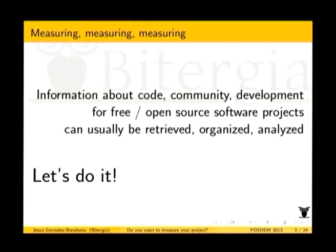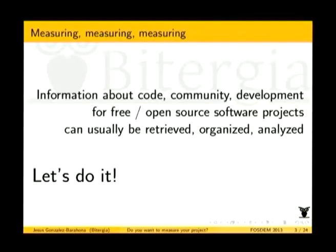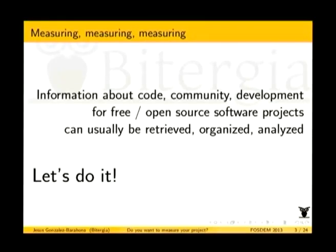Those of you that are developers know that there is a lot of information — not only about the code, which everybody knows is out there, but also a lot of information about the community: how the community interacts in mailing lists, in bug tracking systems, how the developing has been done in the commit records and code review tools. Free software projects are putting that information out there for transparency, and once that information is there, anyone can retrieve, organize, and analyze it.